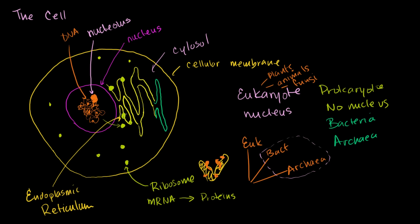The parts of the endoplasmic reticulum that have ribosomes attached are called the rough endoplasmic reticulum, or rough ER. The rough ER—maybe an even better name for a band—is where ribosomes are attached.